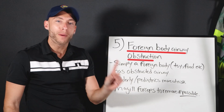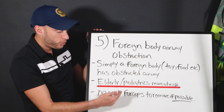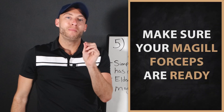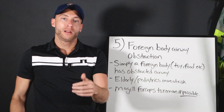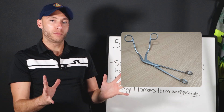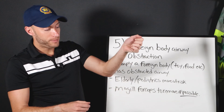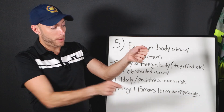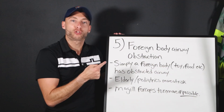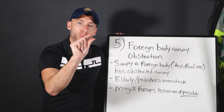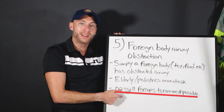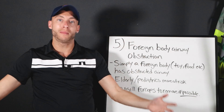Number five is a foreign body airway obstruction. The elderly and the very young are at most risk. Make sure your McGill forceps are ready. With McGill forceps, you use the intubation blade to visualize, then grab the foreign body to clear the airway. Stridor here means a partial obstruction — that foreign body is one movement away from becoming a full obstruction, so have the McGills ready and use them as soon as you can.